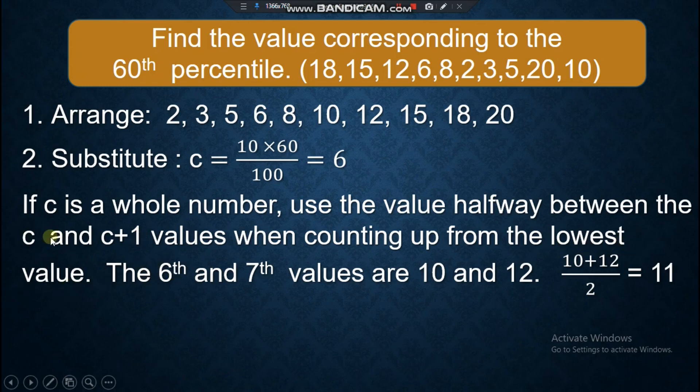C, that is 6th. C plus 1, that is 7th. You're going to find the in-between value of the 6th and the 7th, or simply find the mean or the average. What is our 6th value? 1, 2, 3, 4, 5, 6. It's 10. Our 7th value is 12.